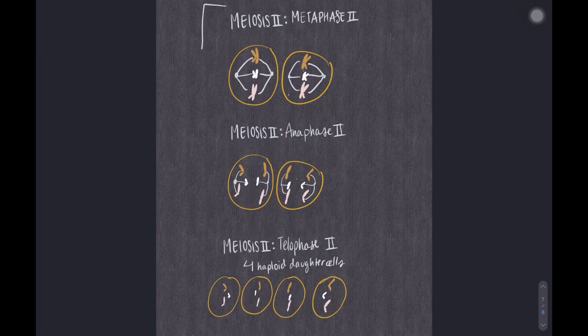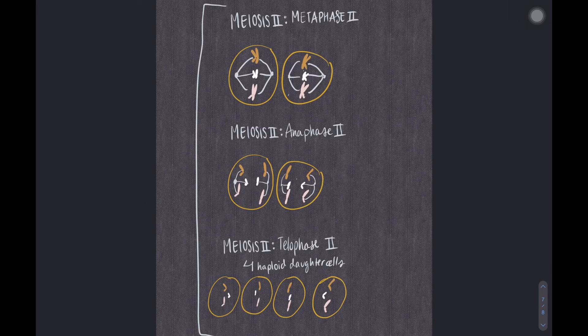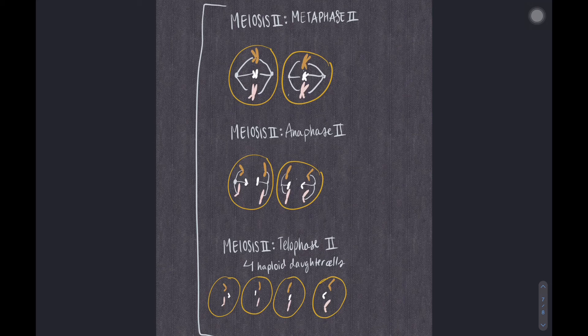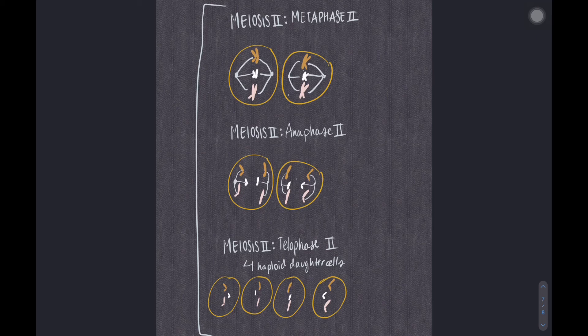Metaphase II is where sister chromatids meet at the metaphase plate. Crossing over does not occur. Anaphase II is where sister chromatids separate. Telophase II, the cells divide, producing four haploid cells.